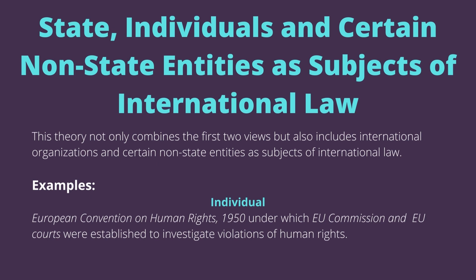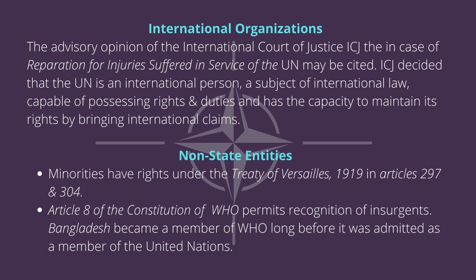The third theory — states, individuals, and certain non-state entities as subjects of international law — not only combines the first two views but also includes international organizations and certain non-state entities. Taking individuals as an example: the European Convention on Human Rights, 1950, under which the European Commission and European Courts were established to investigate violations of human rights. Taking international organizations as an example: the ICJ in the Reparation for Injuries case decided that the UN is an international person, a subject of international law, capable of possessing rights and duties and maintaining its rights by bringing international claims.